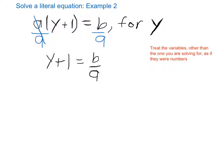And all that remains is to get rid of that plus 1. To cancel out a plus 1, I'm going to subtract 1 from both sides. On the left, that cancels, and I'm left with y is equal to b over a minus 1.